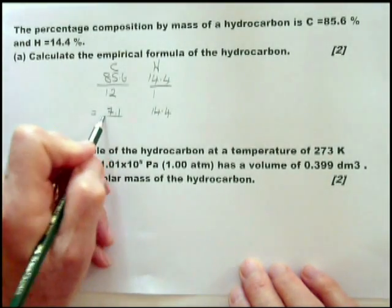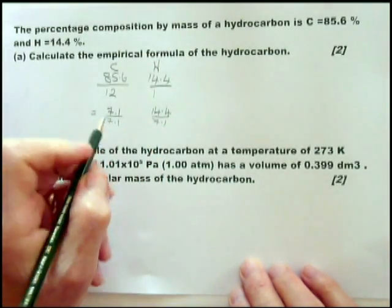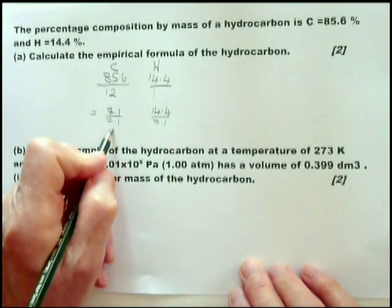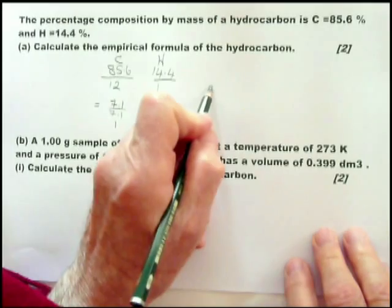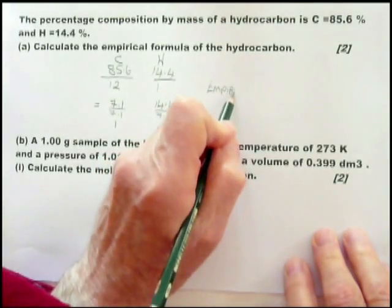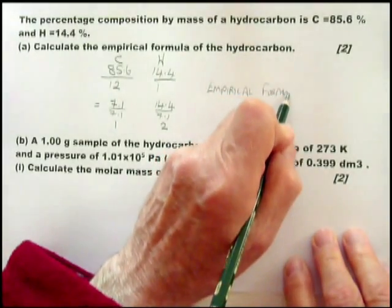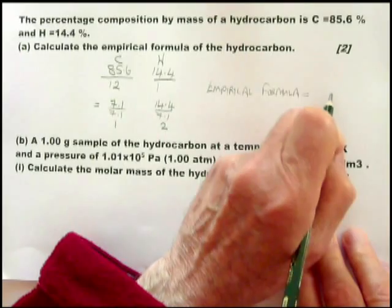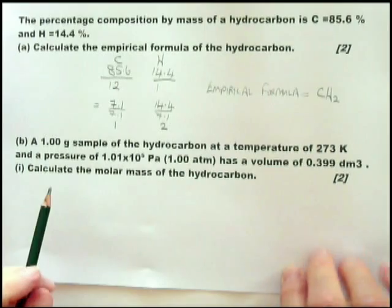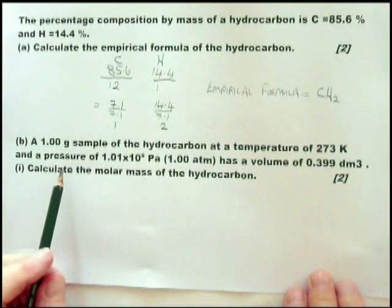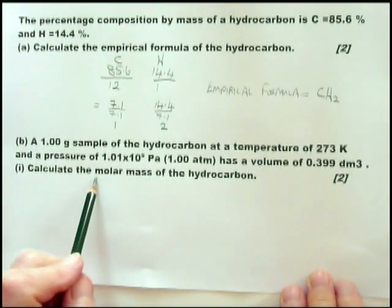Then you divide each by 7.1, and you get the ratio of 1 to 2. Therefore, the empirical formula equals CH2.